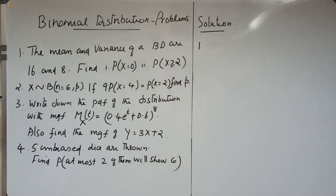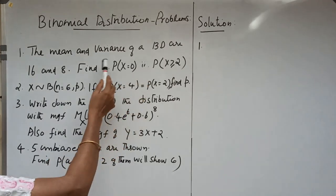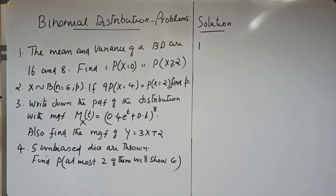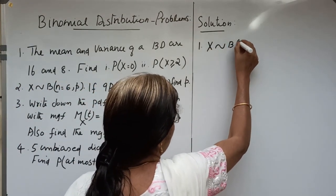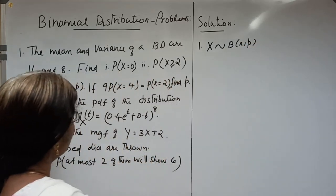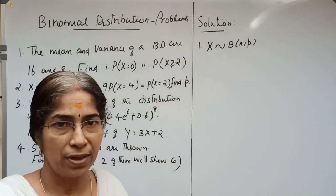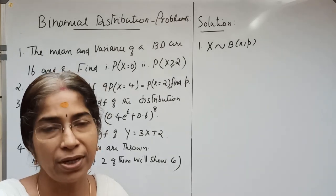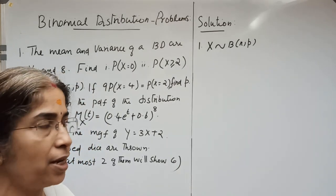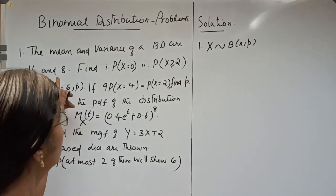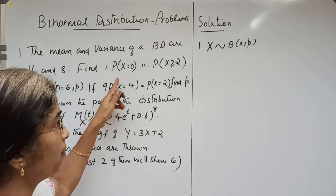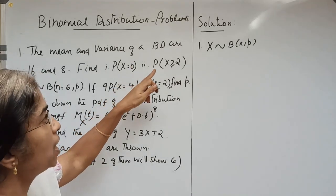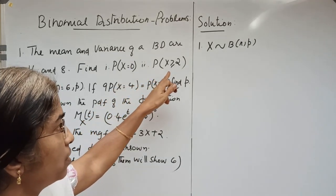The first question: the mean and variance of a binomial distribution are 16 and 8 respectively. We let X follow B(N, P). For binomial distribution, mean equals NP and variance equals NPQ. We want to find the probability X equal to 0 and probability X greater than or equal to 2.